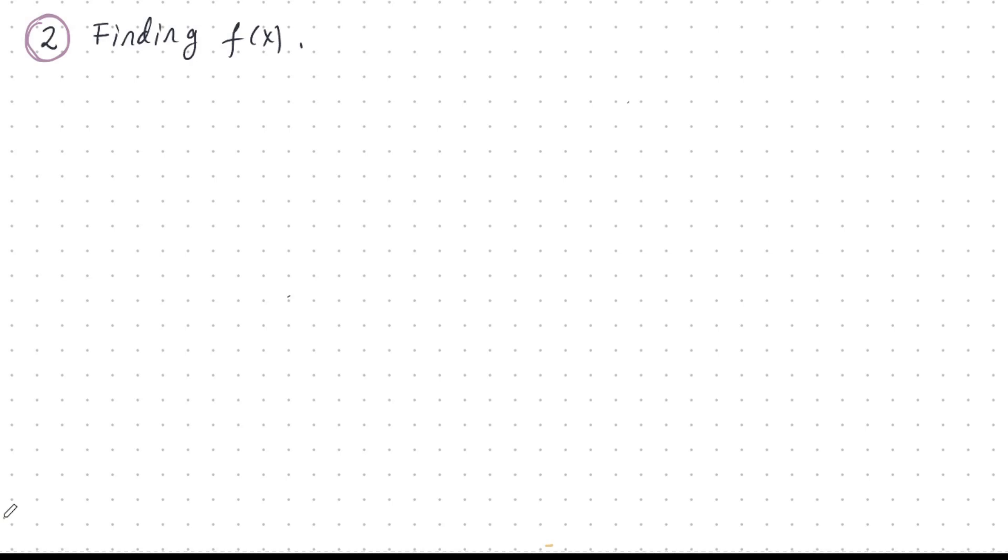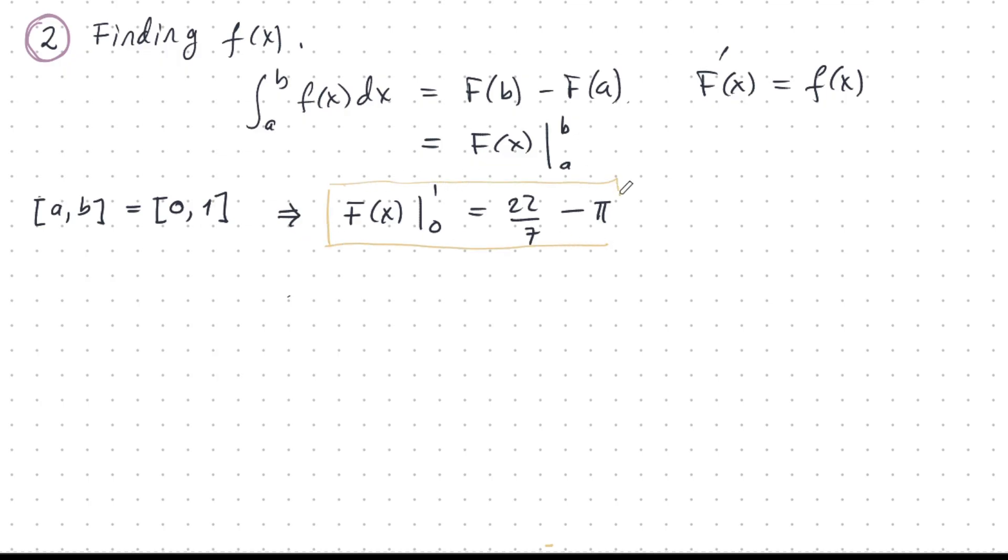The fundamental theorem of calculus says the following. This definite integral is the difference of big F of b minus big F of a, where the derivative of big F x is the integrand f of x. And I can write this from a to b. Let's take a wild guess that if I use the interval from 0 to 1, the closed interval 0, 1, then this will work. And so with this assumption, I'm looking for this big F such that evaluated from 0 to 1, I get 22 over 7 minus pi.